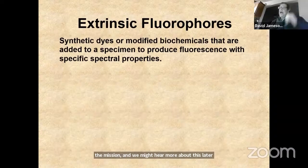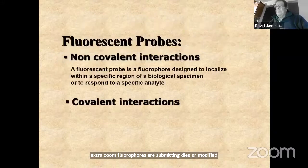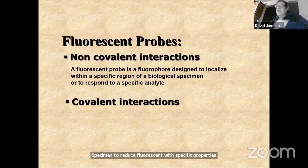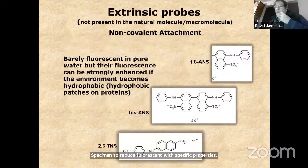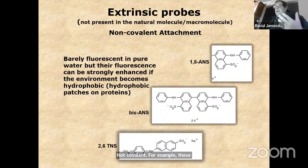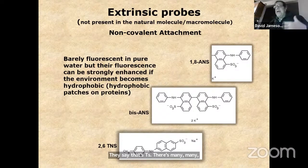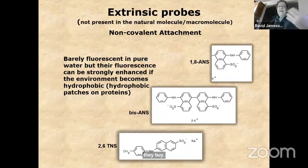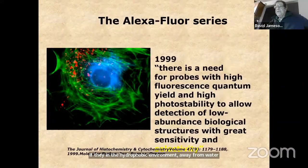Extrinsic fluorophores are synthetic dyes or modified biochemicals added to a specimen to produce fluorescence with specific properties. They can interact non-covalently or covalently with the target. Non-covalent probes such as ANS, bis-ANS, and TNS are very poorly fluorescent in water, but their fluorescence enhances tremendously in a hydrophobic environment away from water — such as hydrophobic patches on proteins — which quenches them in aqueous solution.